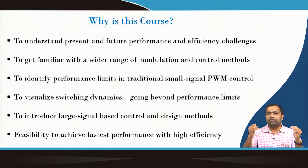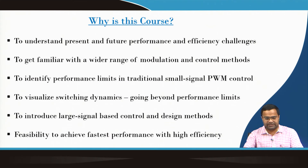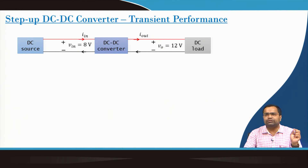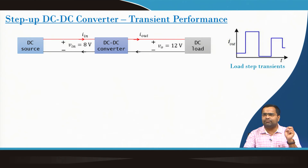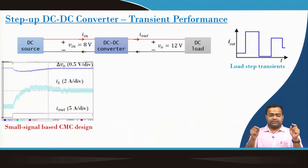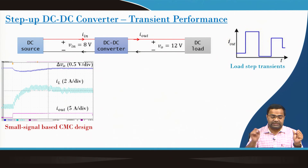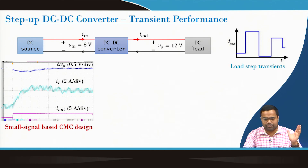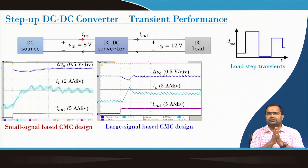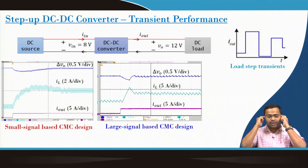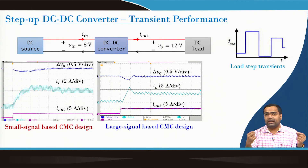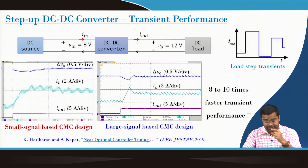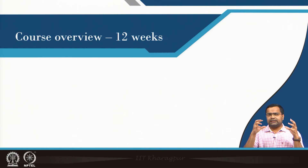I am showing a step-up DC-DC converter, which is a boost converter, using 8 volt input and 12 volt output. The converter is going through a step load transient. The experimental result shows current mode control designed using a small signal based model, which is traditionally used in commercial products. This performance limitation is due to the right-half-plane zero, which limits the bandwidth. But if we use a large signal based control and tuning method, we can improve the performance by 8 to 10 times. In this course, we are going to see the increasing use of such large signal based control techniques to further improve performance.